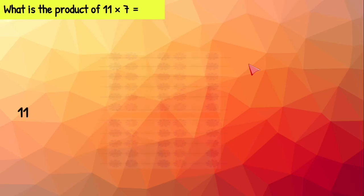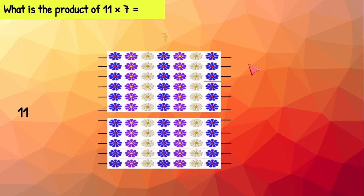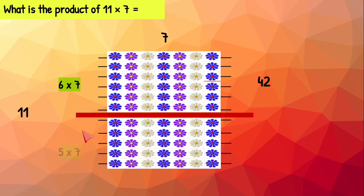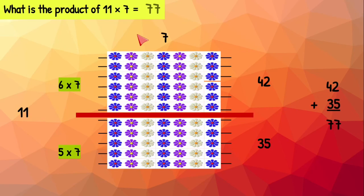11 times seven. We need 11 rows with seven flowers on each row. Let's go ahead and cut our array so we have two smaller arrays. On the top we have six rows of seven, which is 42. On our other array we have five rows with seven flowers on each row. We know that five times seven equals 35. Let's put 42 and 35 together, which gives us 77.